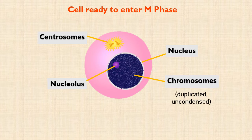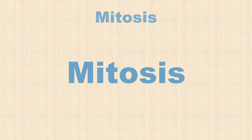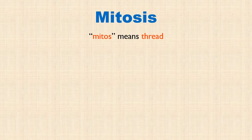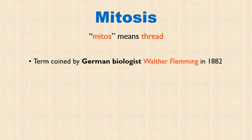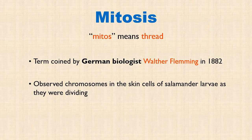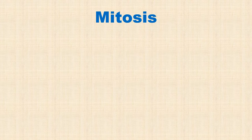Let's now study mitosis in detail. The name mitosis comes from the Greek word mitos, meaning thread. The term mitosis was coined by German biologist Walter Fleming in 1882. He observed chromosomes in the skin cells of salamander larvae as they were dividing. Mitosis is defined as a process of nuclear division in which replicated chromosomes are segregated or distributed into two nuclei.